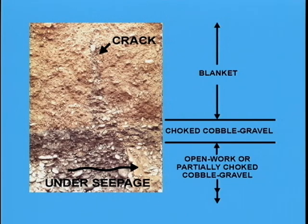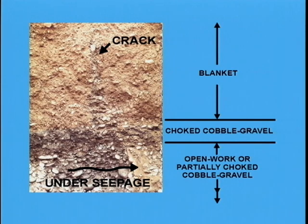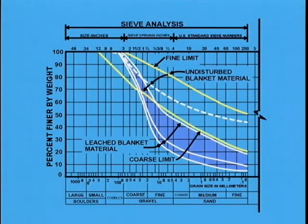Two basic questions arise: where did the fines from the blanket go, and why were they washed out? The river cobbled gravel on which the blanket was placed was choked with river sand for at least the top two or three feet. However, the sand fraction can readily pass through the interstices of the cobbled gravel. Water seeping under the blanket could wash the sand out of the cobbled gravel immediately beneath the blanket into open-work cobbled gravel nearby. Water seeping down cracks would also assist in washing down the fine fraction. The open-work cobbled gravel readily satisfies filter criteria for the blanket — the D-15 of the cobbled gravel is much less than four times the D-85 of the blanket material.